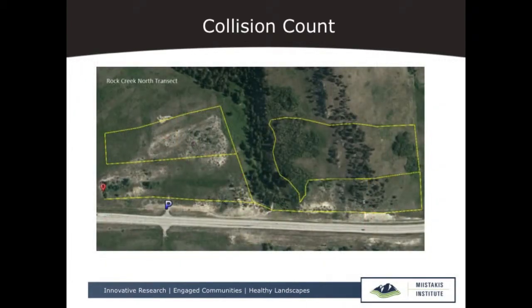This is a typical transect that the volunteer walks — this is Rock Creek on the north side. They walk this series of transects and every time they see a roadkill observation they record it using a smartphone app that Rob has trained them all to use. There are fields to fill in, and there's also a photo option — I've spared you the roadkill photos that have been collected, but that's a project I'm looking forward to.